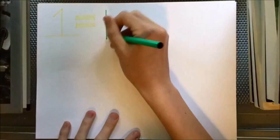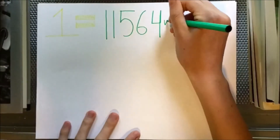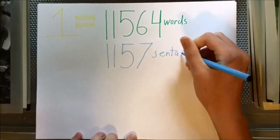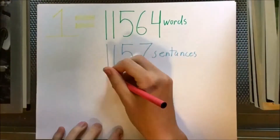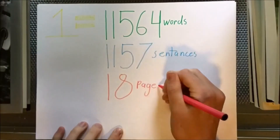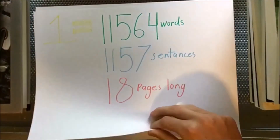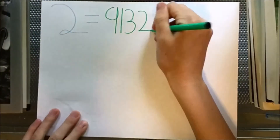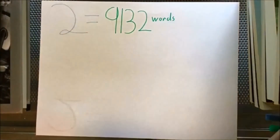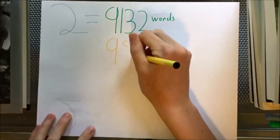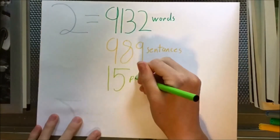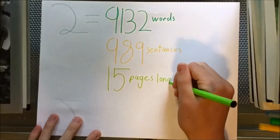Story number one had 11,564 words, 1,157 sentences, and it was about 18 pages long. Story number two had 9,132 words, 989 sentences, and it was about 15 pages long.